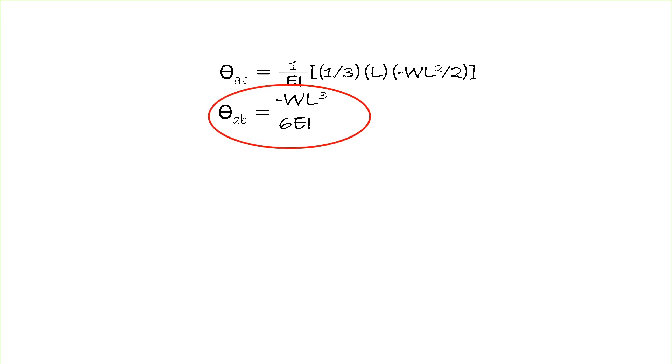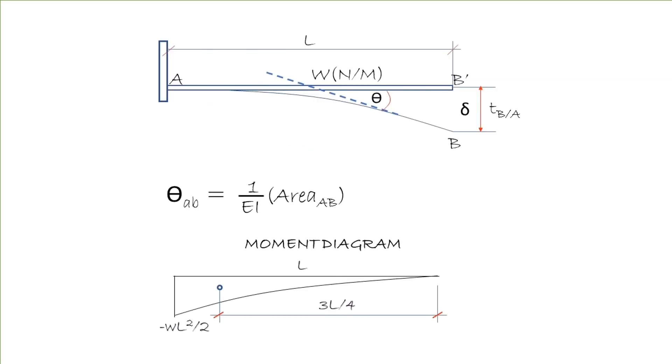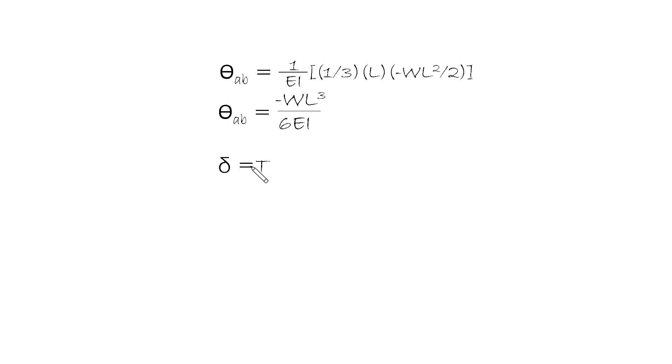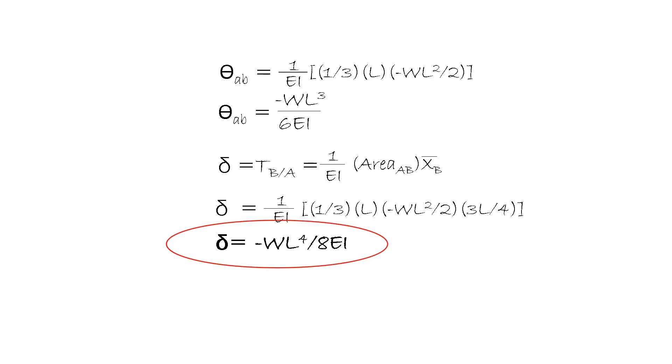So this is our theta AB. The deflection delta here is just the angle theta multiplied by the lever arm here and multiplied by this one over EI. So this is the deflection.